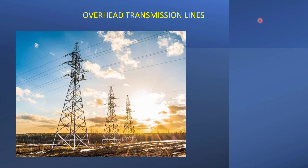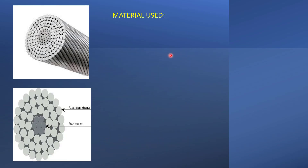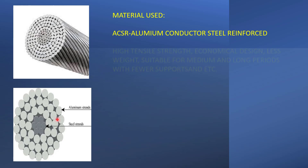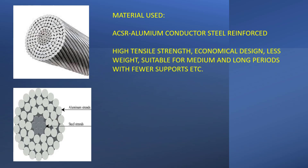The other type is overhead transmission lines, which you may have seen in your locality — a tower with transmission lines running above it. These are used for long-distance transmission, can carry relatively higher voltages than underground cables, and are less expensive. The material generally used is ACSR — aluminum conductor steel reinforced — which has a steel strand in the middle with aluminum strands attached above it. Advantages of ACSR include high tensile strength, economical design, less weight, suitability for medium and long distances, and fewer supports required.